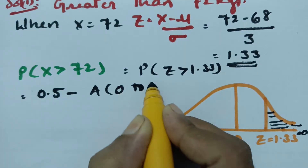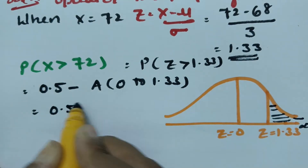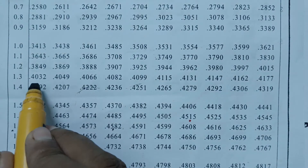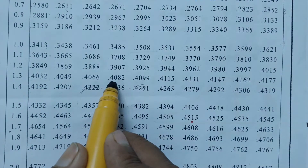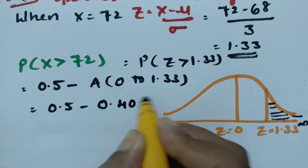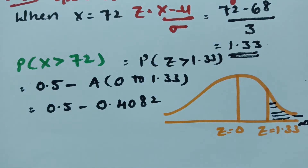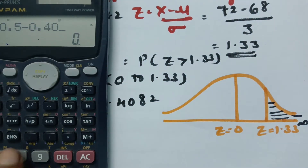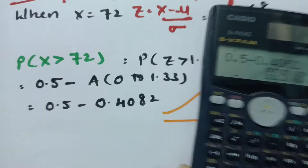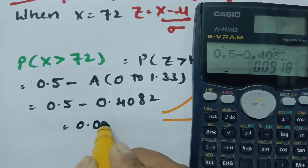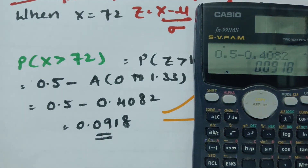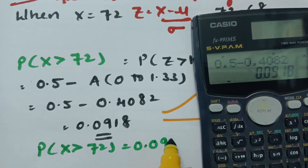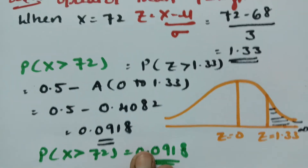That is 0.5 minus the area from 0 to 1.33. Looking up the z-table for 1.33, the area is 0.4082. Therefore the probability is 0.5 minus 0.4082, which equals 0.0918. So the probability for x greater than 72 is 0.0918.